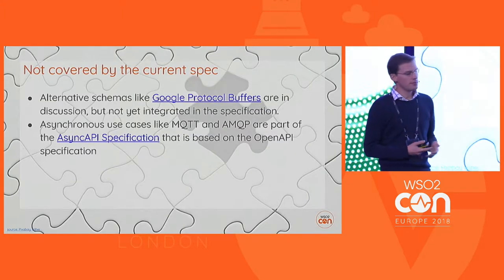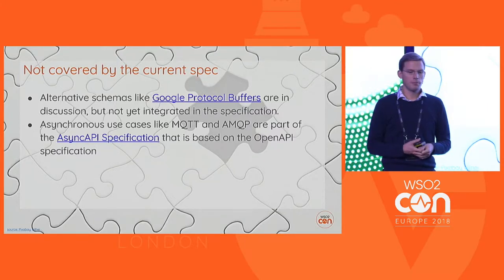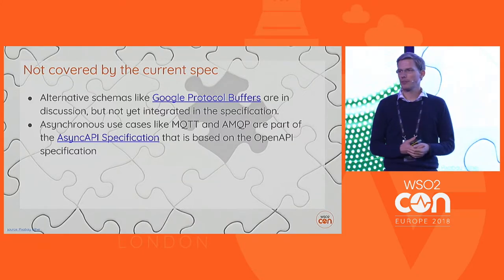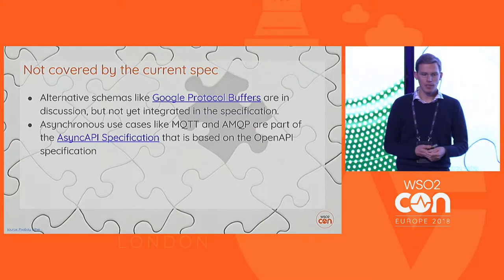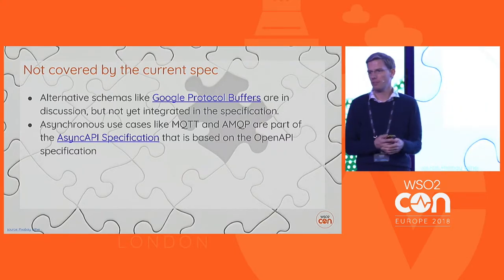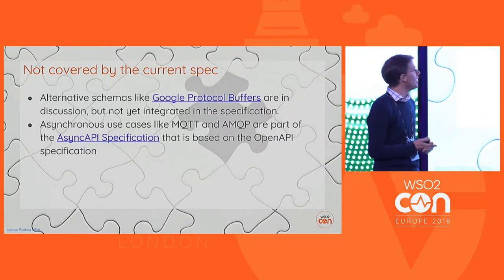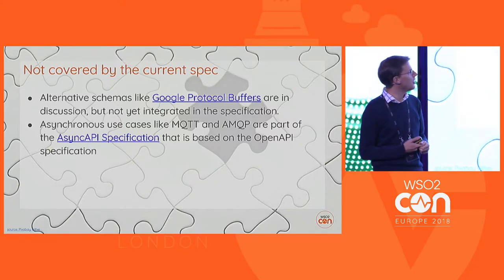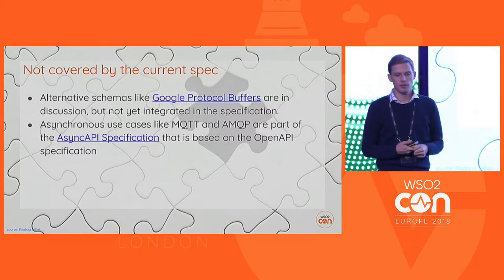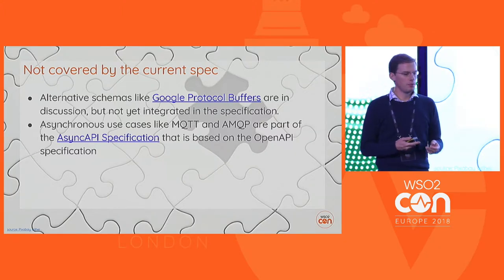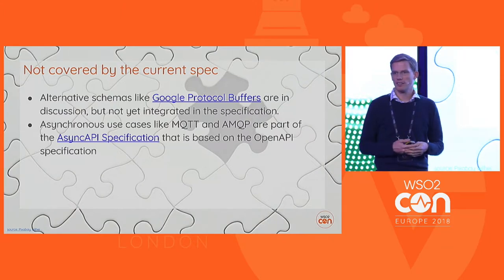What's not covered? Alternative schemas like gRPC were in discussion but didn't make it into version 3. There's some fork named Async API specification which you can use for IoT scenarios like MQTT or AMQP. It's based on and influenced by the OpenAPI specification, but it's not a sister project developed concurrently.